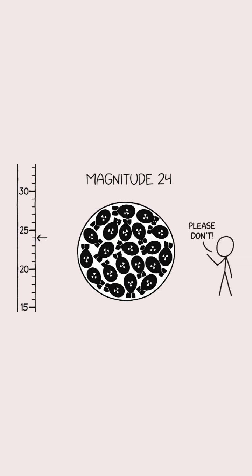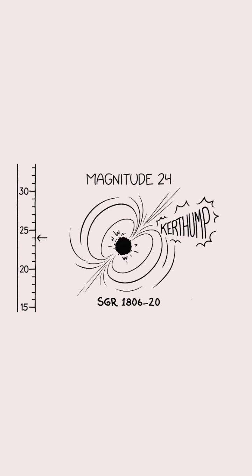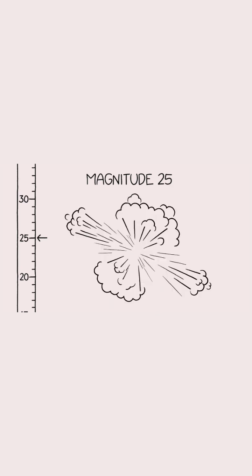The most powerful quakes in the known universe, which occur in super heavy neutron stars, are about this magnitude. A magnitude 25 quake would explode the Sun.